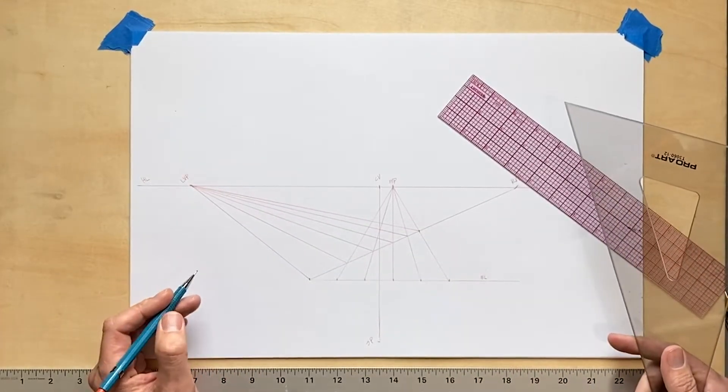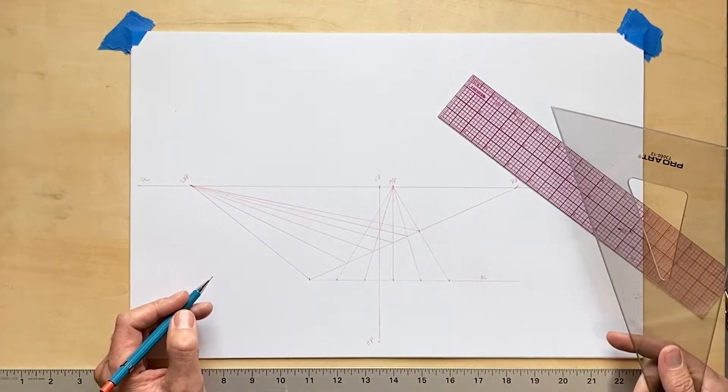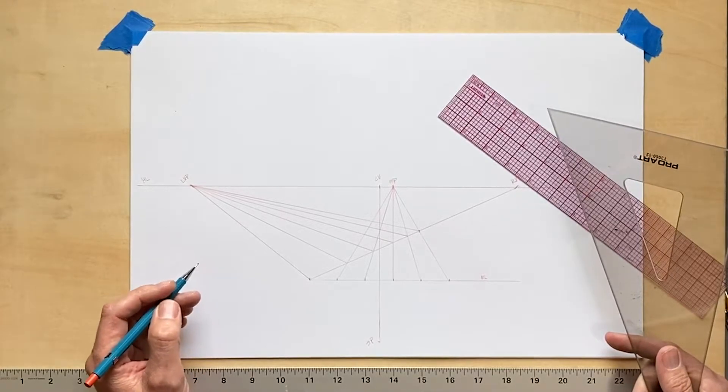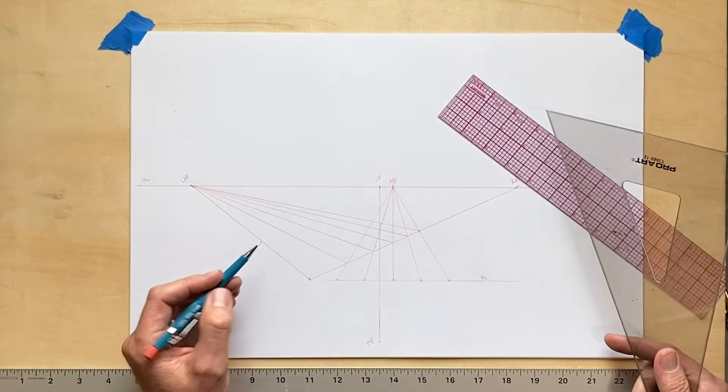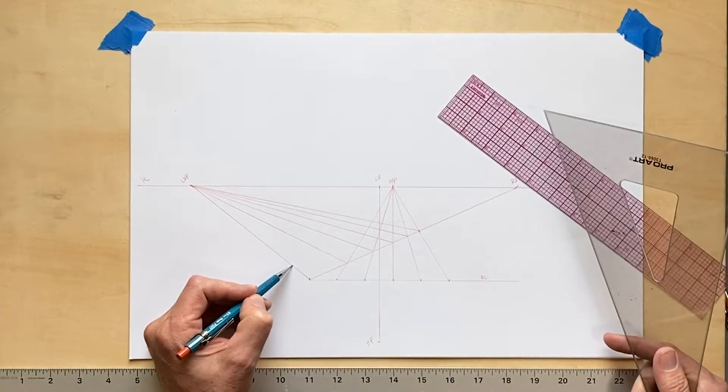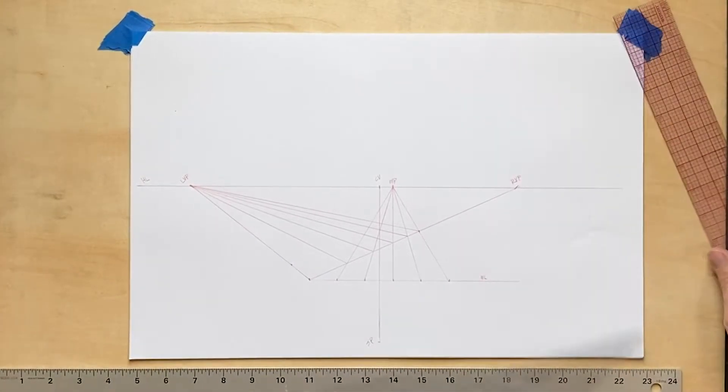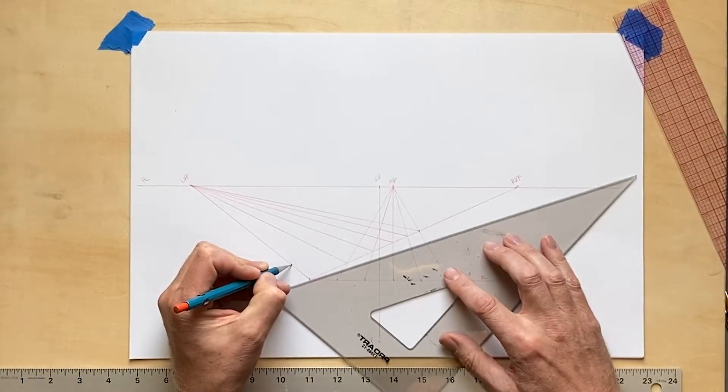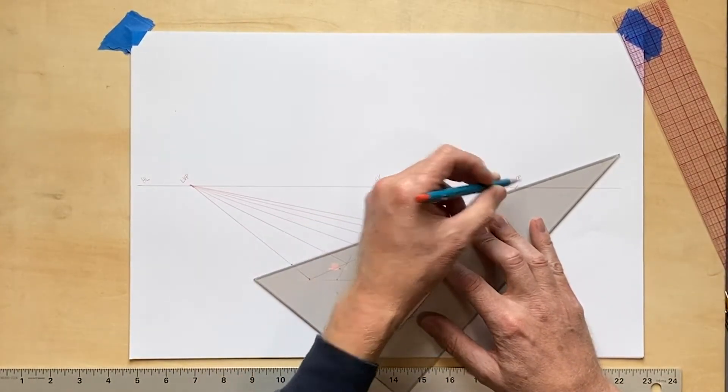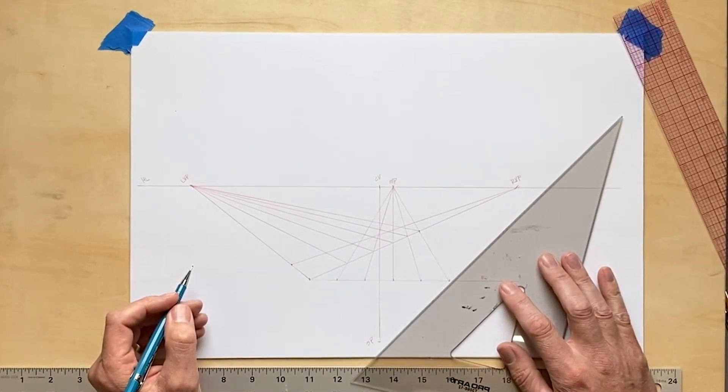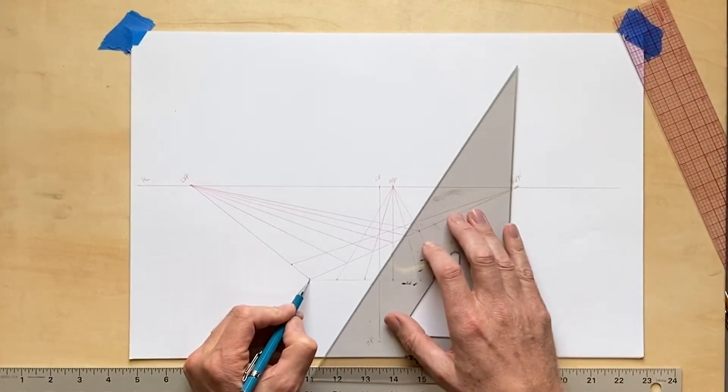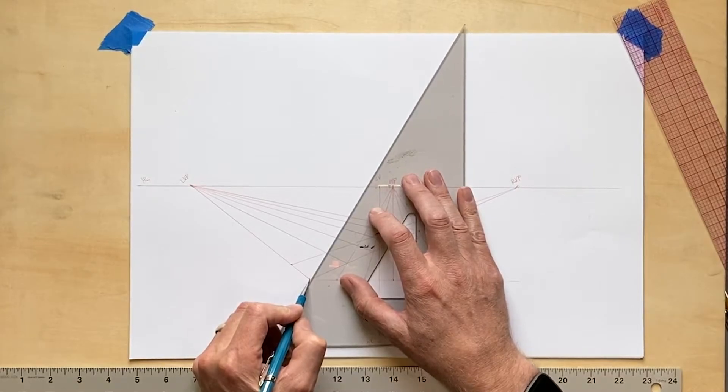Now just notice how each of those spaces is getting smaller as it moves towards that horizon line, showing us that there is some foreshortening going on. Now I'm going to choose the depth of a new row on the left side and I just eyeball what looks close to being a squared space in perspective and I draw a line to the right vanishing point this time. My first row of squares is now done.